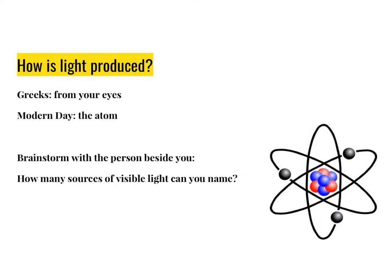The primary source though of all light in the universe is from the atom. The first unit that you did this year was mix and flow of matter where you learned about particles. Well the atom is another name for that particle. It's more specific. And next year in grade 9 you'll learn more about the atoms of different elements as well as the parts of the atom.